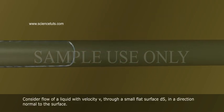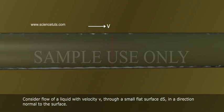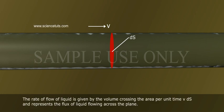Consider flow of a liquid with velocity v through a small flat surface ds in a direction normal to the surface. The rate of flow of liquid is given by the volume crossing the area per unit time v ds and represents the flux of liquid flowing across the plane.